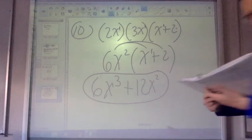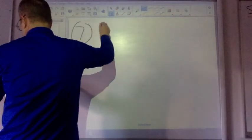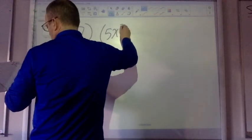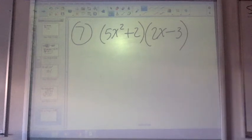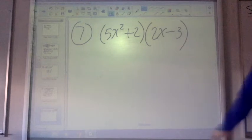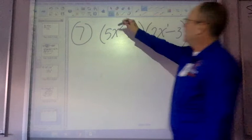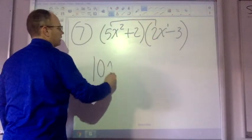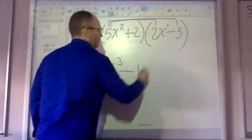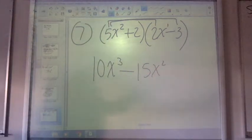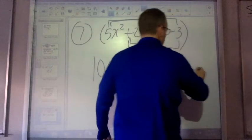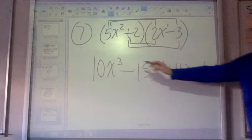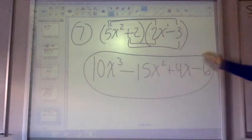Number 7: I have 5x squared plus 2, and 2x minus 3. This is a double distribution. I'm going to distribute to get 10x to the third, then distribute here to get negative 15x squared. We're not quite done — I still have to distribute the 2. So 2 times 2x gives me plus 4x, and 2 times negative 3 gives me minus 6. Do we have any like terms? I have x to the third, x to the second, x, and a constant — no like terms to combine. That's the entire answer.